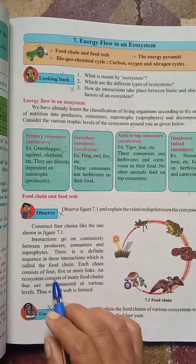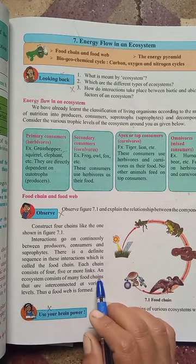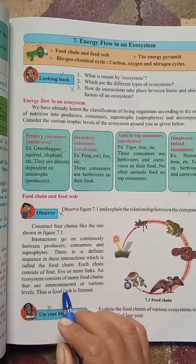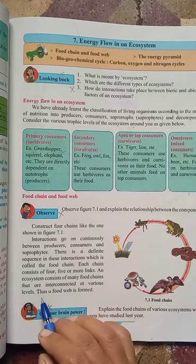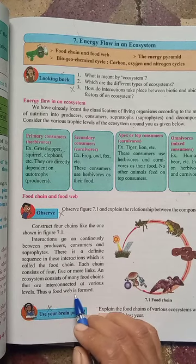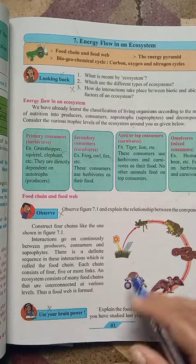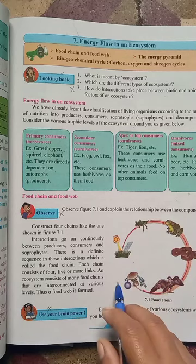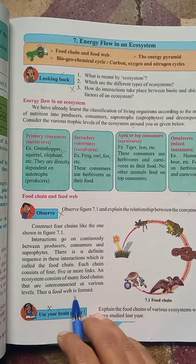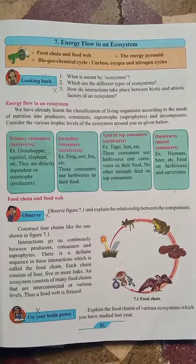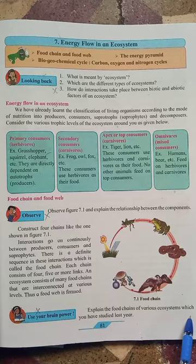Each food chain consists of four, five, or more links. An ecosystem consists of many food chains that are interconnected at various levels — thus a food web is formed. Many food chains interconnected to each other is called a food web. Next, use your brain power: explain the food chains of various ecosystems which you have studied last year.